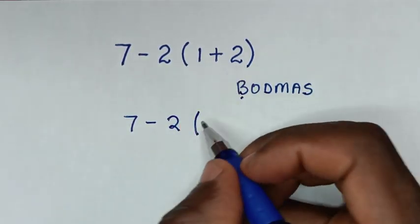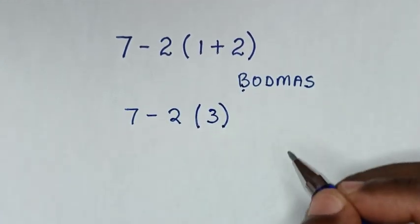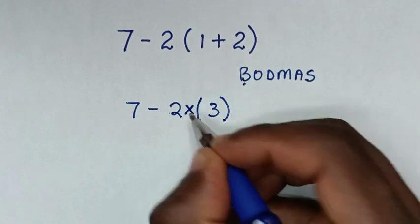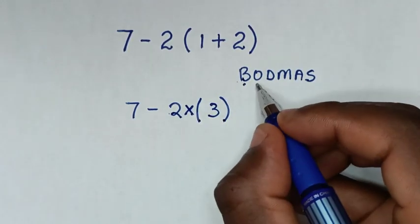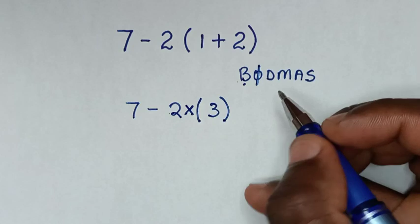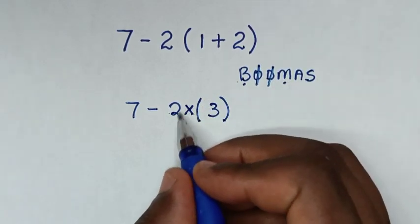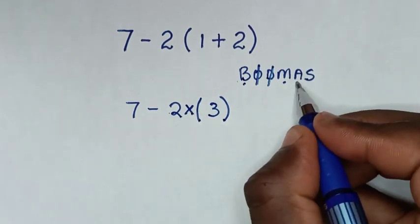Between two and three we have a multiplication sign. Now from our rule, we don't have orders or exponents, we don't have division, but we have multiplication, and we don't have addition.